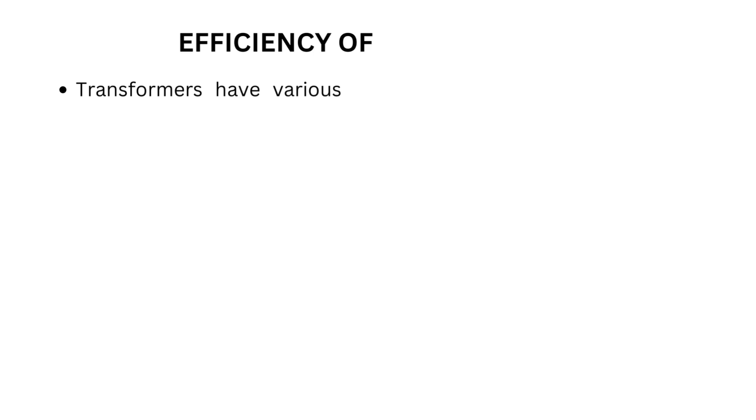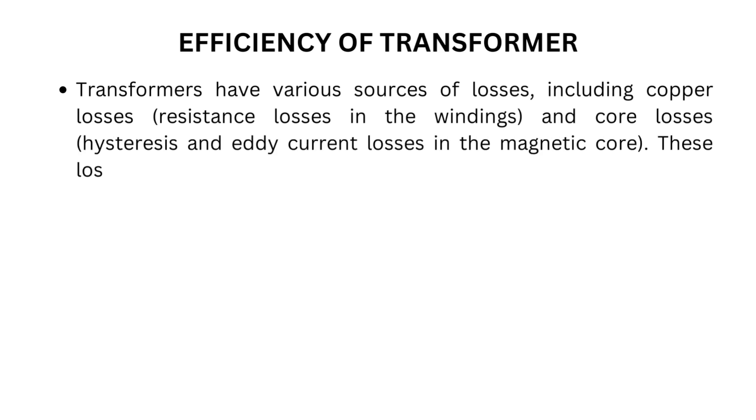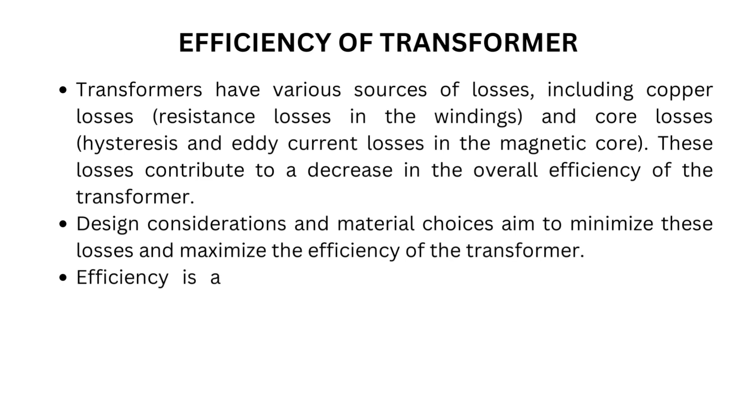Transformers have various sources of losses, including copper losses (resistance losses in the windings) and core losses (hysteresis and eddy current losses in the magnetic core). These losses contribute to a decrease in the overall efficiency of the transformer. Design considerations and material choices aim to minimize these losses and maximize the efficiency of the transformer.